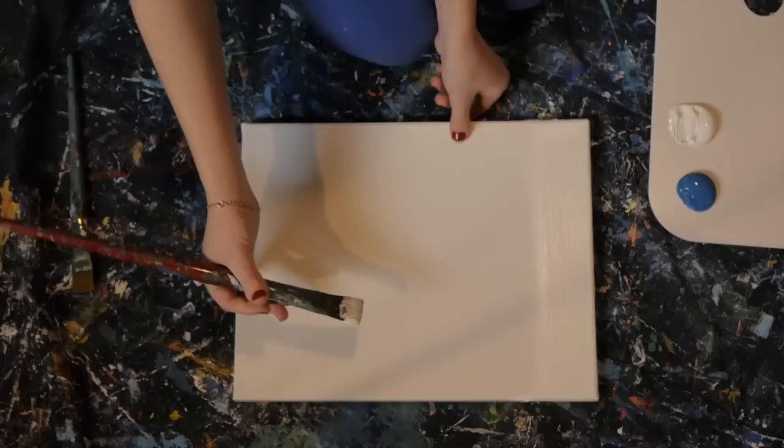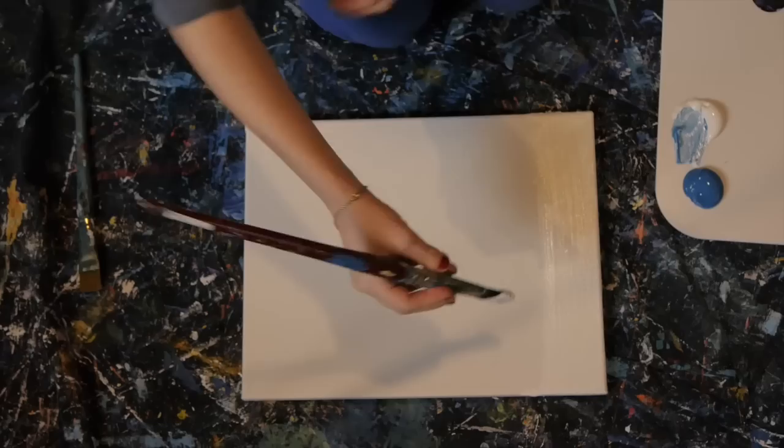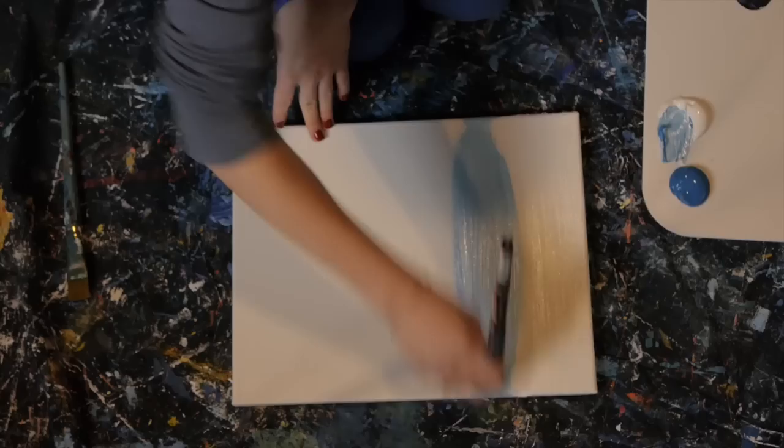Once you've got your lighter color all on the top of the canvas, you're going to add a little bit of your darker color to the light and paint just above that first line that you painted.